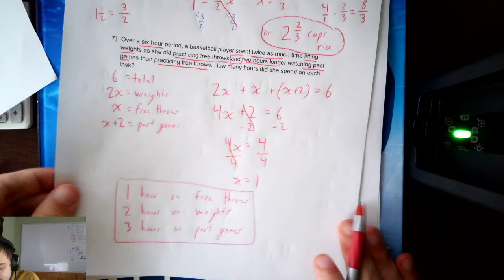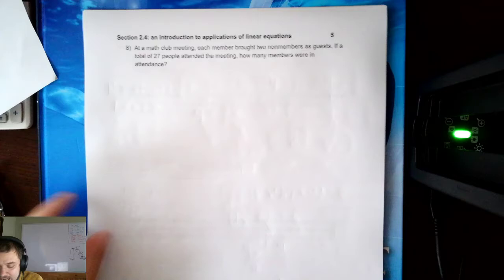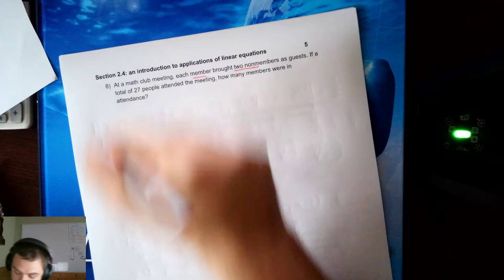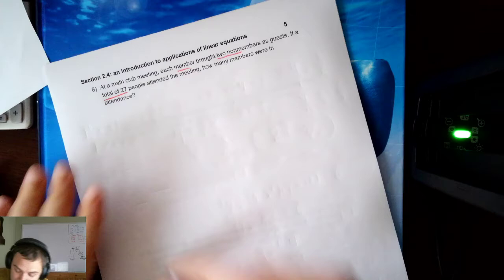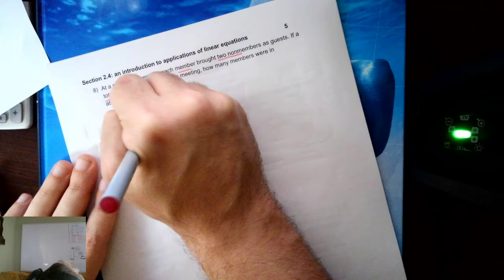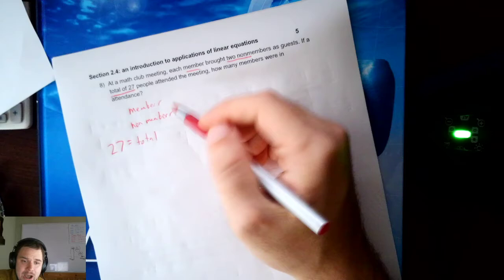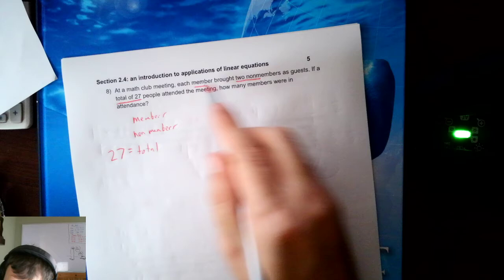Now we have one more example. One last example. At a math club meeting, each member brought 2 non-members as guests. If a total of 27 people attended the meeting, how many members were in attendance? I've got members, non-members, and the total. I know the total was 27. I don't know how many members or non-members were there, though. But I know that for every member, there were 2 non-members.